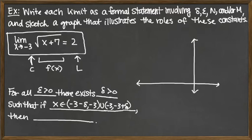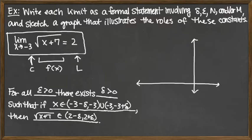With that punctured interval, we would be able to trace back to having our function in an interval around L. Our function here is the square root of x plus 7, and that's going to land in the interval around L. Since L is 2, that would be 2 minus epsilon to 2 plus epsilon — remember, intervals go from small values to large values.